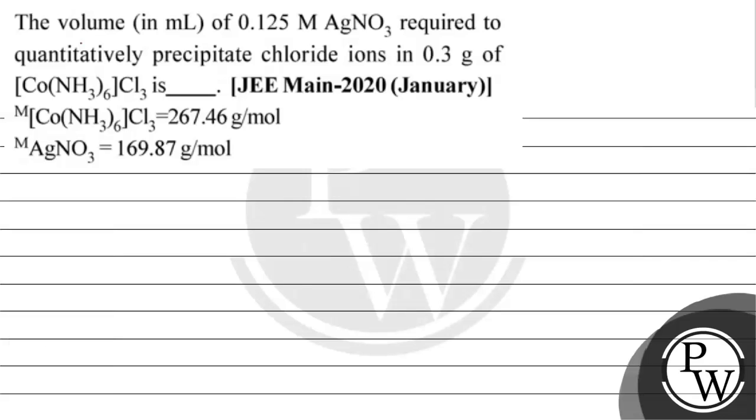Hello, let's read this question. The question says: volume in mL of 0.125 molar AgNO3 required to quantitatively precipitate chloride ions in 0.3 gram of [Co(NH3)6]Cl3 is? Molar mass diya hai complex ka - 267.46 gram per mole.